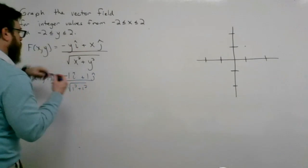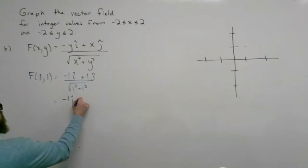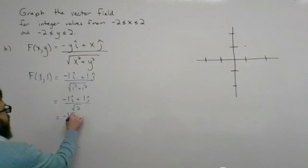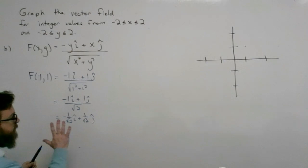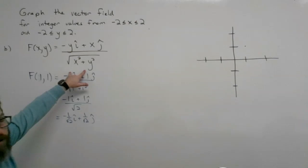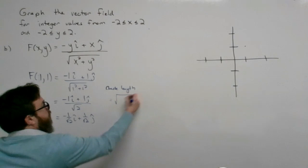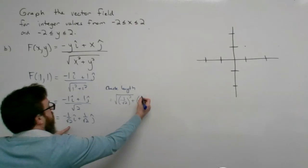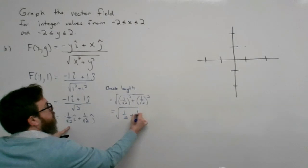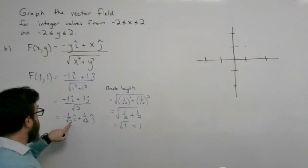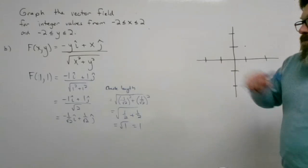This gives -1i + 1j all over the square root of 2, so -1/√2 i + 1/√2 j. My claim is that all these vectors have length 1 because of the denominator. Let's check: the length equals √((-1/√2)² + (1/√2)²) = √(1/2 + 1/2) = √1 = 1. So it has length 1 — moving negative in x and positive in y.